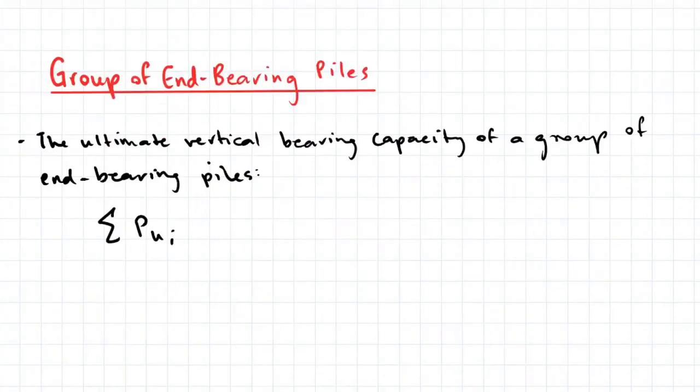The ultimate vertical bearing capacity of a group of N bearing piles on rock, or on dense sand or gravel with equally strong material underneath, can be taken as the sum of the vertical capacities of the individual piles in the group.